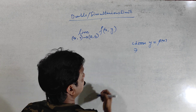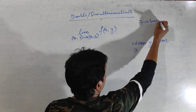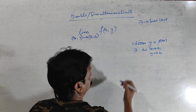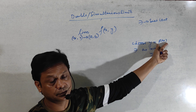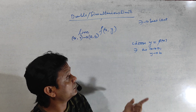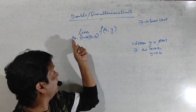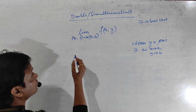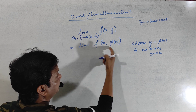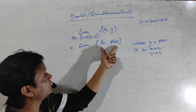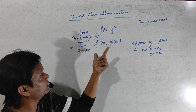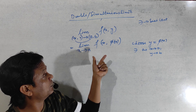The condition is that you should choose y as a function of x, and that function of x — I will give you some examples so you can get an idea of how to choose. The condition is: when x approaches a, at the same time y must approach b, so that the limit of f(x, y) — with y replaced by φ(x) — becomes completely in terms of x, a single variable. Then x tends to a and you can solve it as usual, using standard methods like L'Hôpital's method.